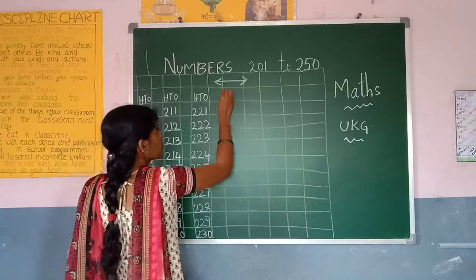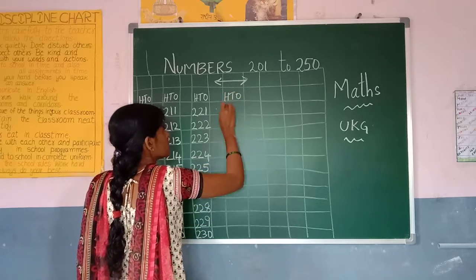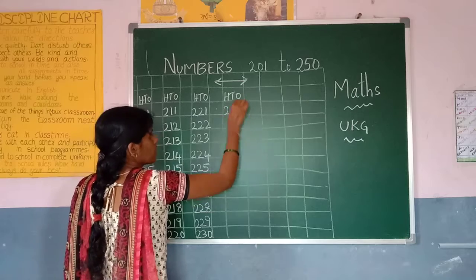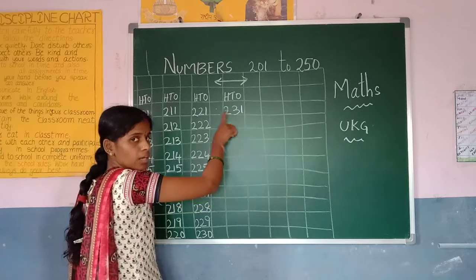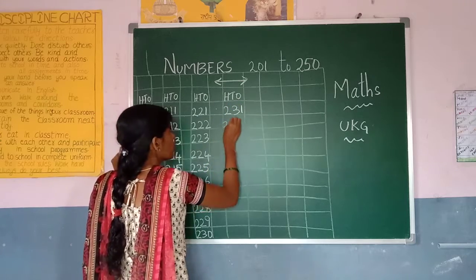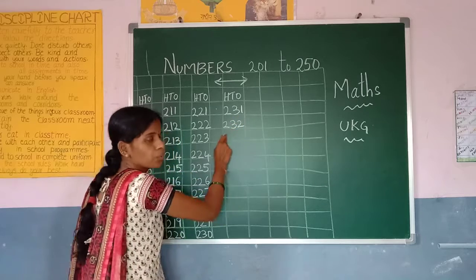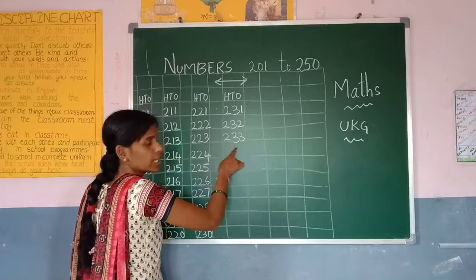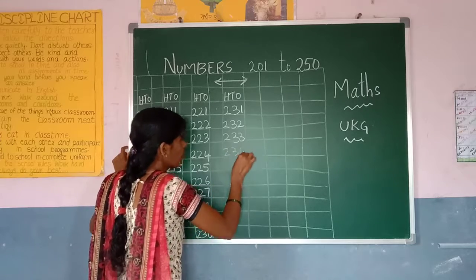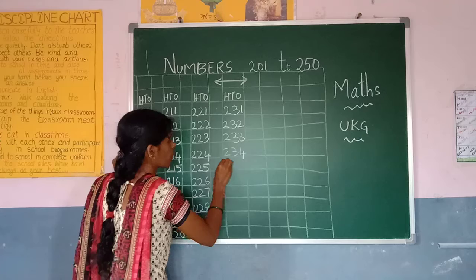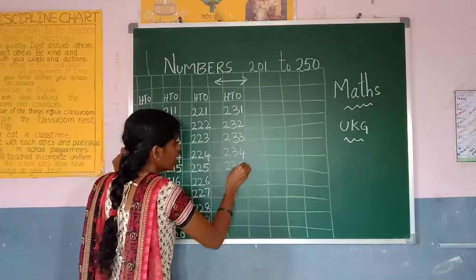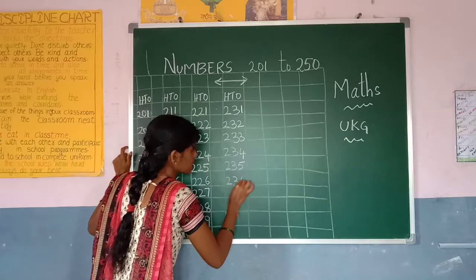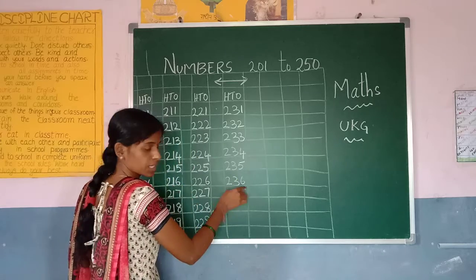Leave one line here again. We have to write the heading as we go. 231. 232. 233. 234. 235. 236.